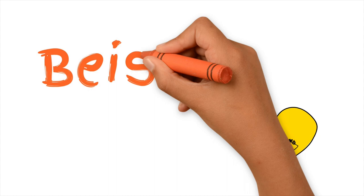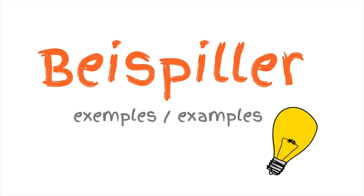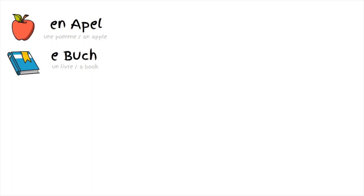Let's take a closer look at some examples. A — an apple. B — a book. C — Karol.